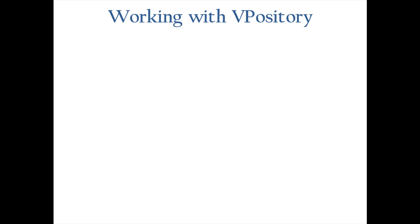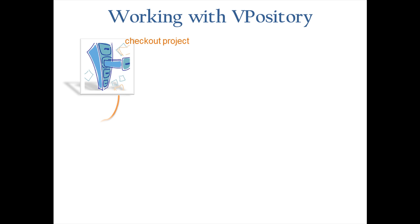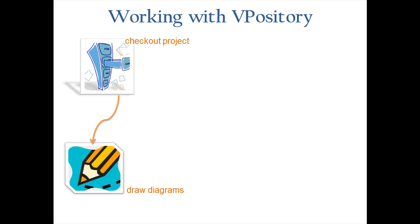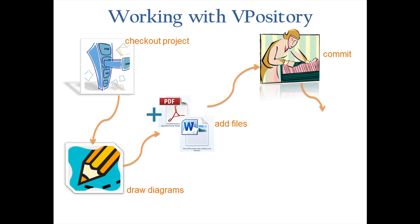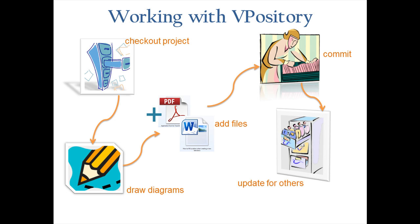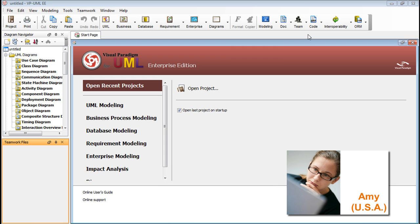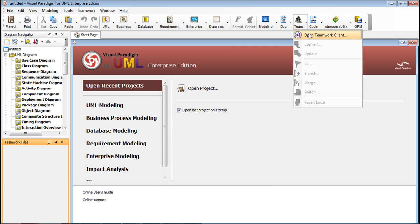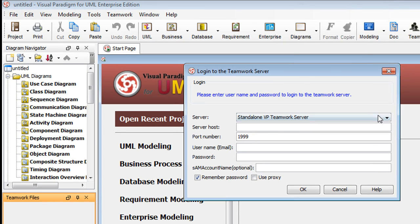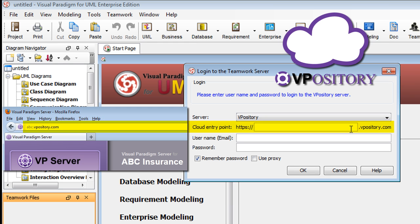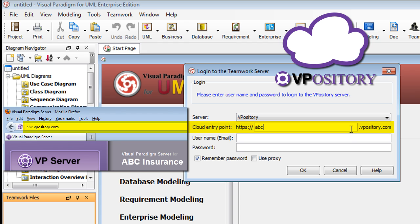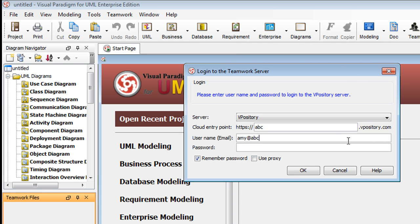Here's a typical path of usage. One would probably begin by checking out the project, then make some changes to the diagrams, then maybe add some related files such as a template for the application form, followed by a commit. Then other users do an update. Next, we'll see a demo using Visual Paradigm for UML as the client application talking to Vipository.